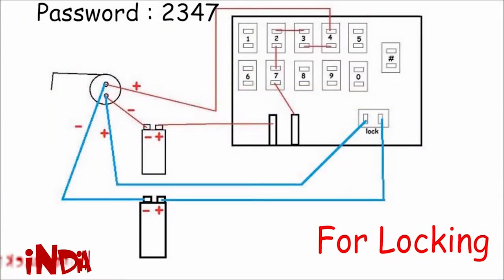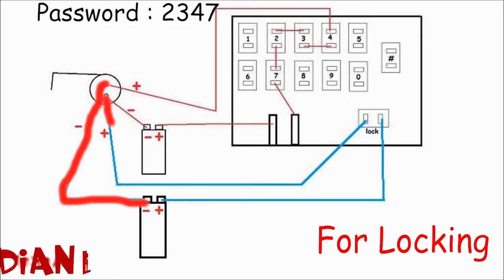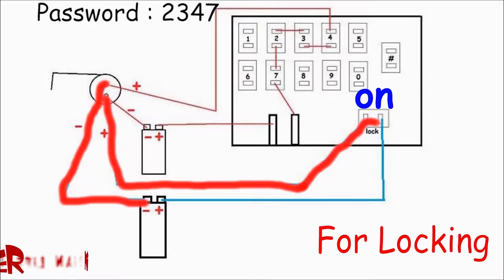This is a circuit for locking the locker. Here the lock switch is directly connected to the motor and battery in series. So when you will turn on this switch, the motor will lock the lock.